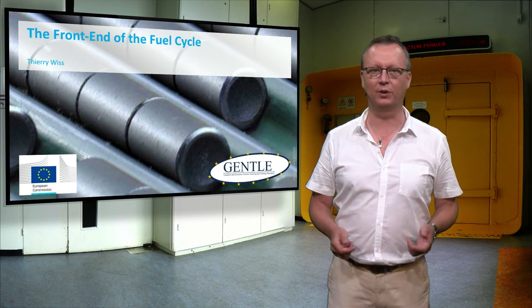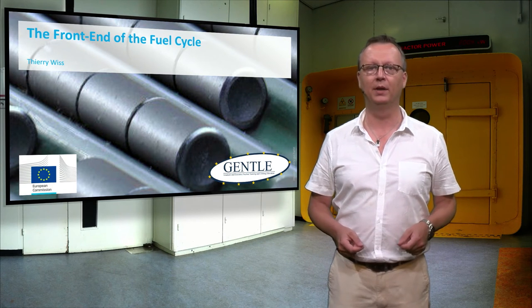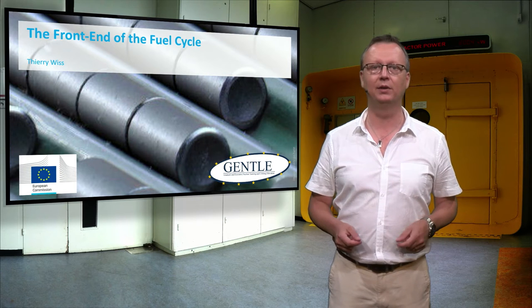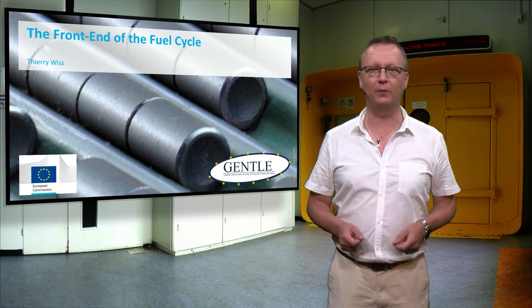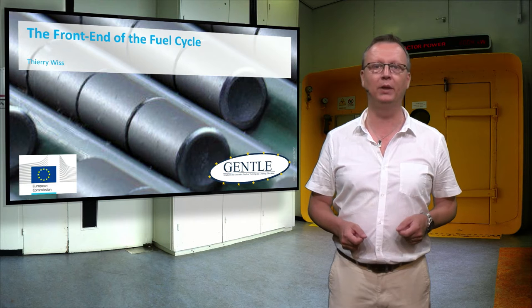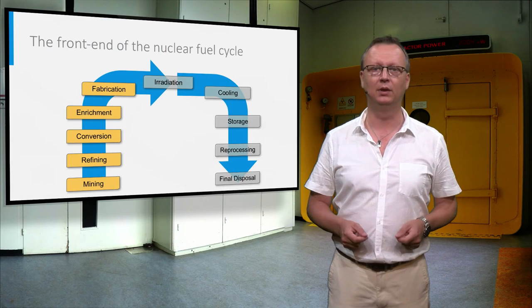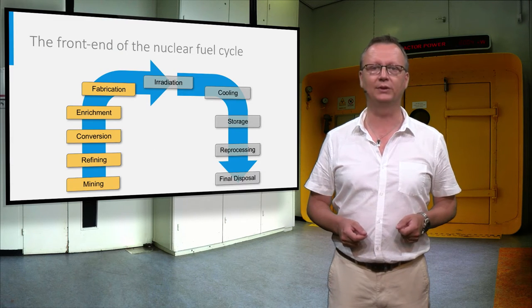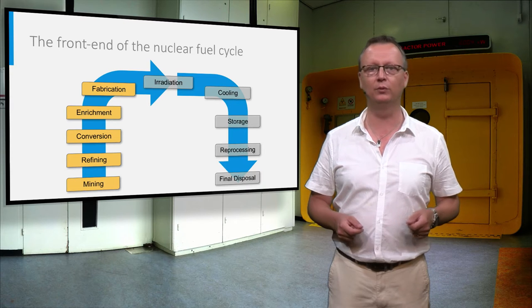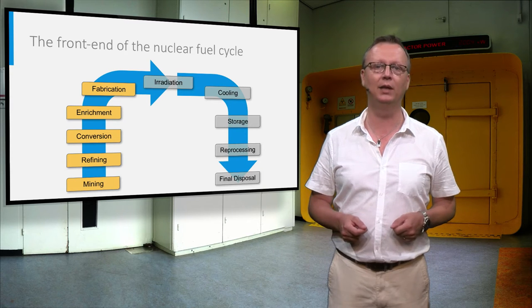We have just learned about the physico-chemical properties of uranium, and we'll see how it is processed, starting from the mining to its fabrication to a fuel pellet that will be used in a nuclear reactor. The front end of the nuclear fuel cycle is the collective term for all the processes that are indicated in yellow in this slide.